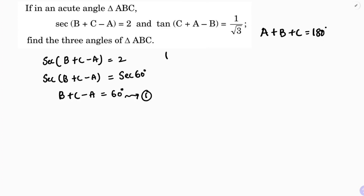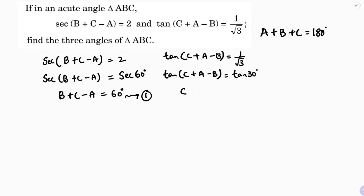The other one: tan(C+A-B) equals 1 by root 3. This value 1 by root 3 you get for tan 30 degrees. So on comparing, C+A-B equals 30 degrees. This is equation 2, and A+B+C equals 180 degrees is equation 3.